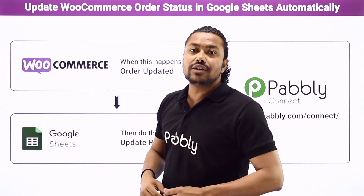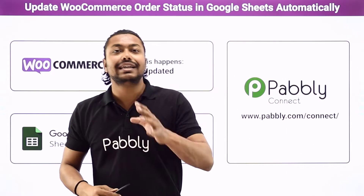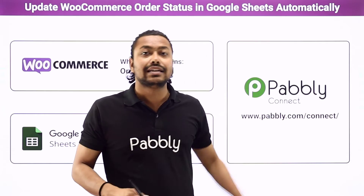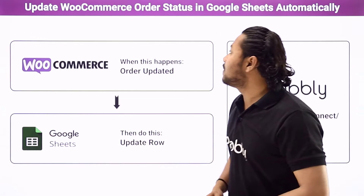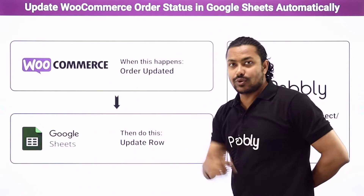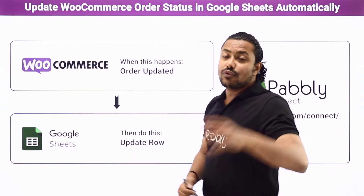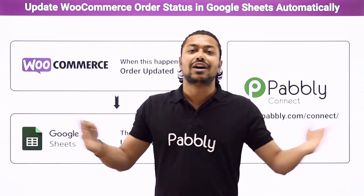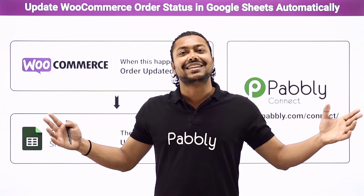To do this automation, we are going to use an integration and automation service called Pabbly Connect, which will help us connect WooCommerce and Google Sheets together. If you want to learn how to do this automation, you have to come with me to the screen.